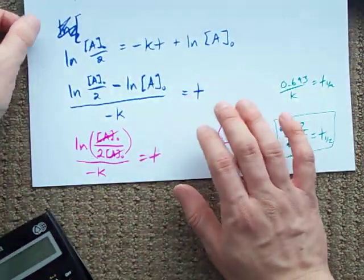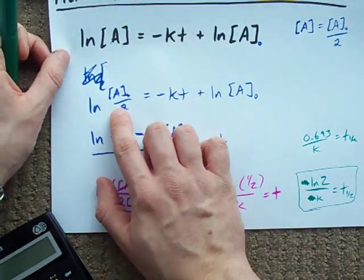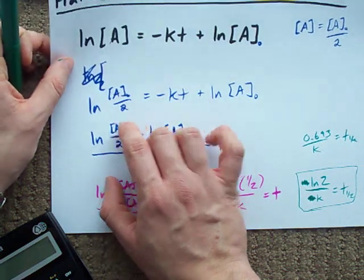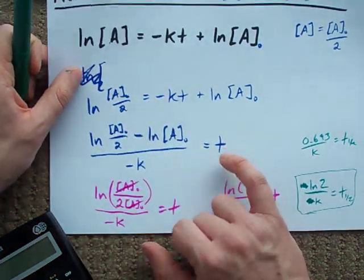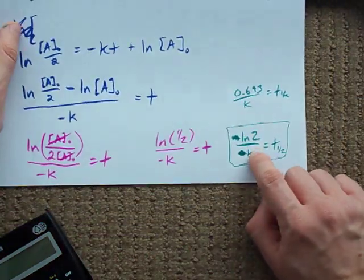But this is where it comes from. Replacing the concentration term with initial concentration divided by 2, rearranging for t and simplifying. Cancels out to this. It's a thing of beauty.